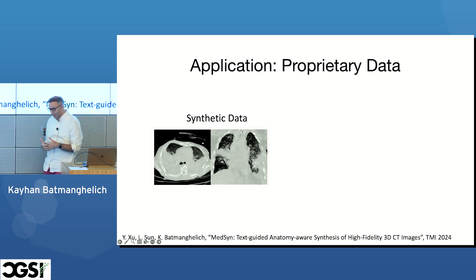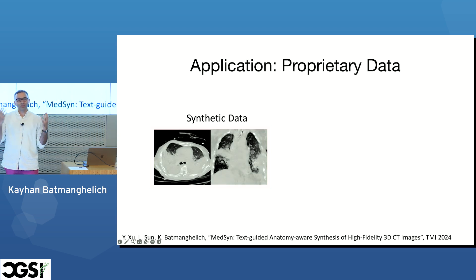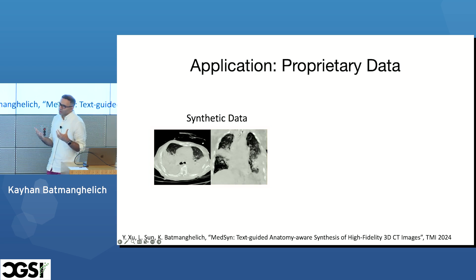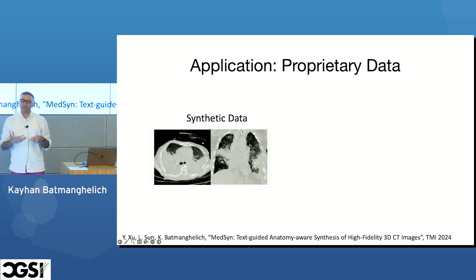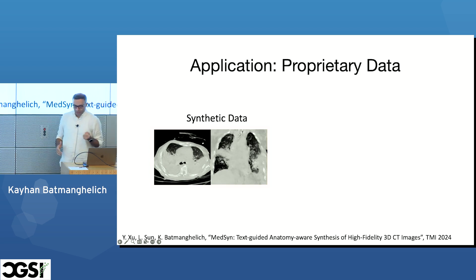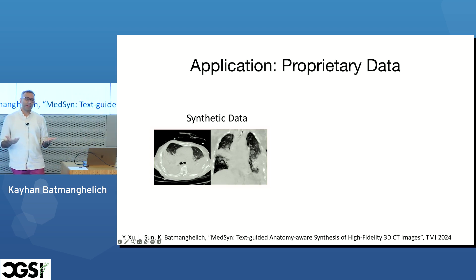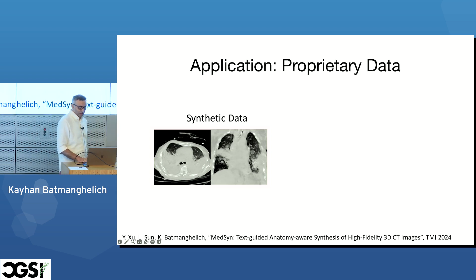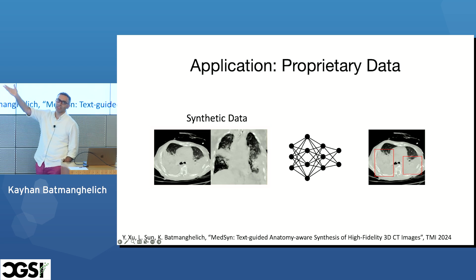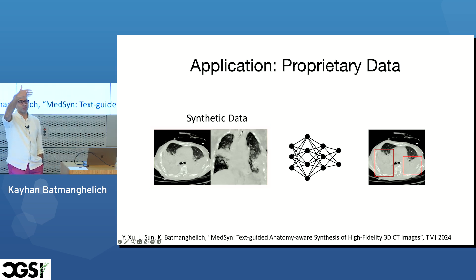Why is this useful? One major issue in AI for healthcare is data availability. Hospitals are reluctant to release data for many reasons, including privacy concerns. A replacement would be creating synthetic data and releasing that instead of real datasets. This synthetic data can then be used for downstream tasks — for example, creating segmentation models that companies can use to build healthcare solutions.